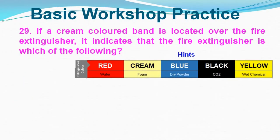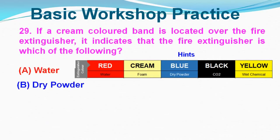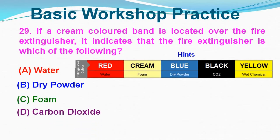Question No. 29: If a cream-colored band is located over the fire extinguisher, it indicates which of the following? Option A: Water, Option B: Dry Powder, Option C: Foam, Option D: Carbon Dioxide. Correct answer is Option C, Foam.